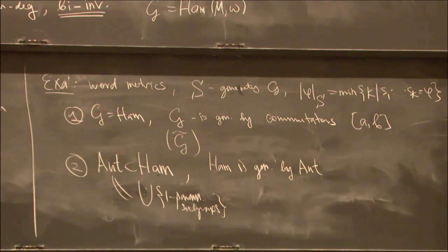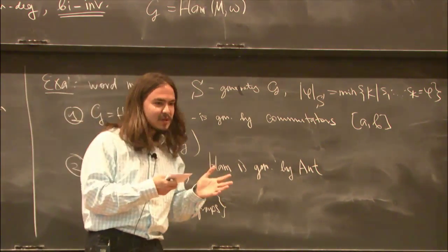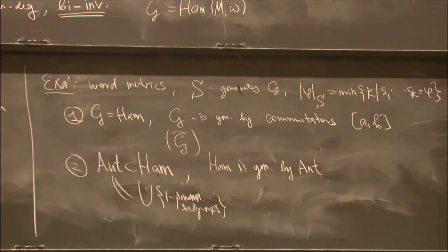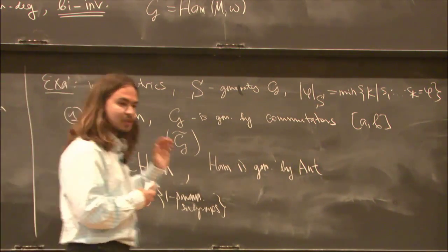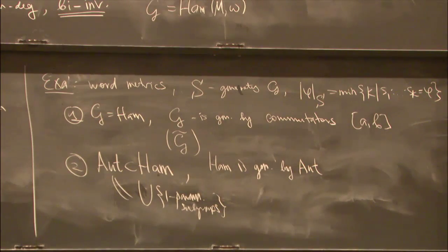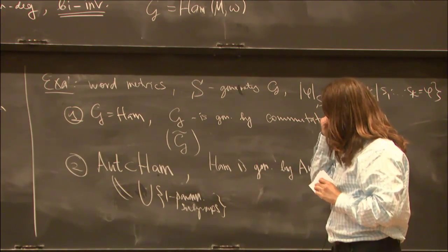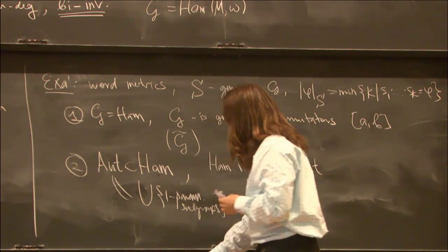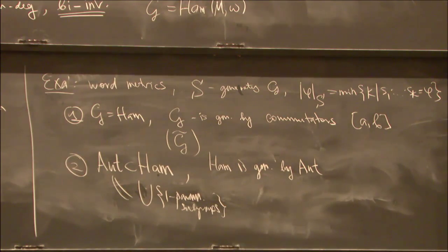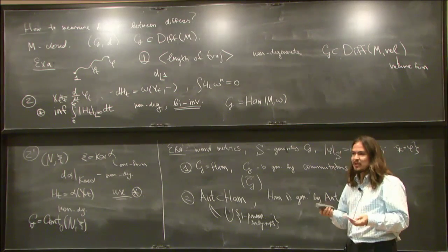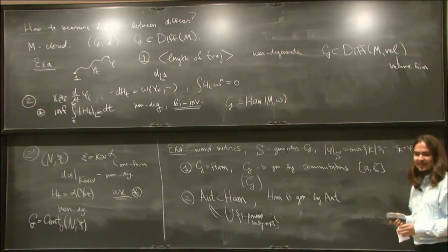There is a third batch of examples that is somehow between these two. This is kind of the geometric part. This is the algebraic part. And somewhere in between there is the theory of quasimorphisms, and also spectral invariants, which I will probably mention a bit later.